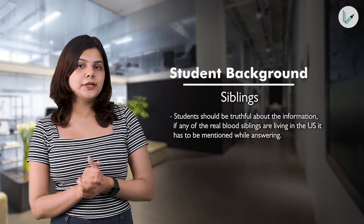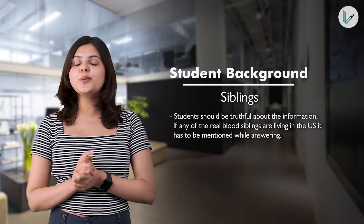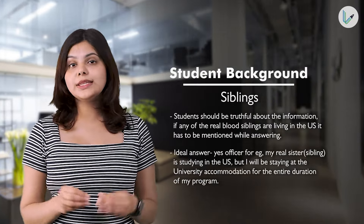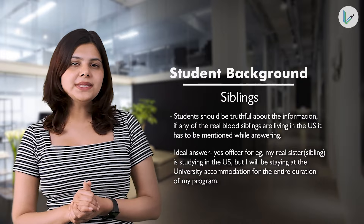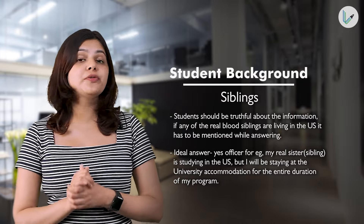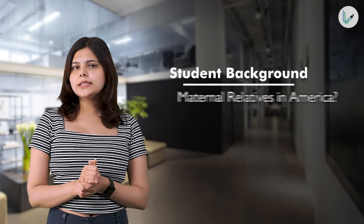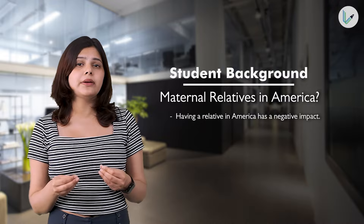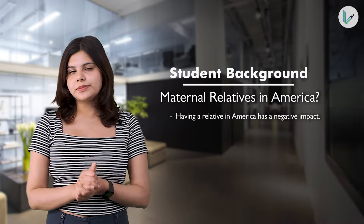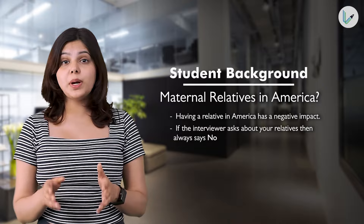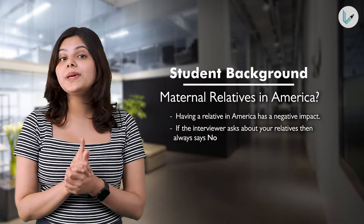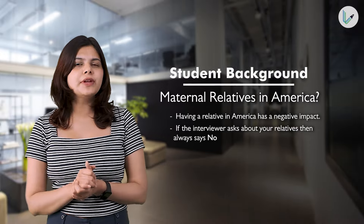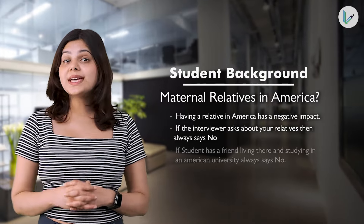Regarding siblings, students should be truthful. If any real blood siblings are living in the U.S., it must be mentioned. An ideal answer could be: 'Yes, officer, my real sister is studying in the U.S., but I will be staying at the university accommodation for the entire duration of my program.' For maternal relatives in America, even if a student has a relative or friend there, always say no. An ideal answer: 'No, I don't have any maternal relatives or friends living in the U.S.'